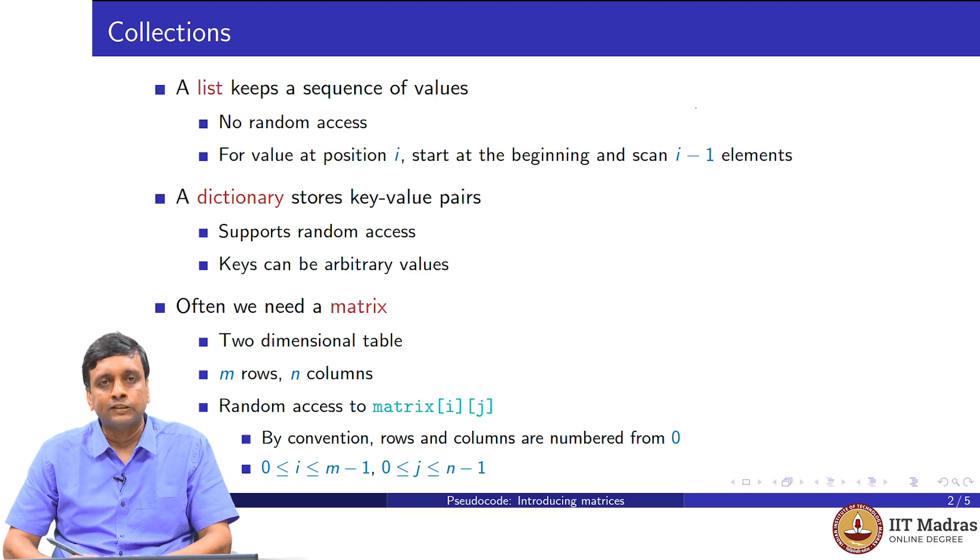This is a convention that is often used in computing. Normally, when you are using it in mathematics, you will number them 1 to n and 1 to m. But it is very standard to number things starting from 0. So we will follow this convention. If we have m rows, the rows are numbered 0 to m minus 1. And if we have n columns, the columns are numbered 0 to n minus 1.